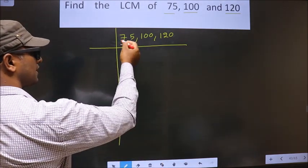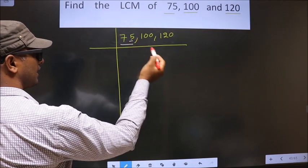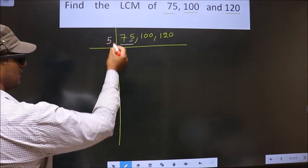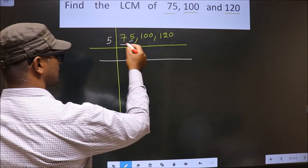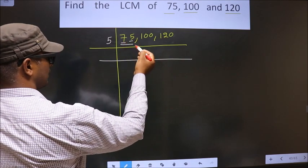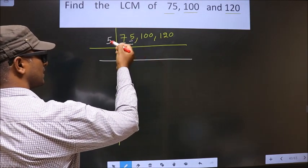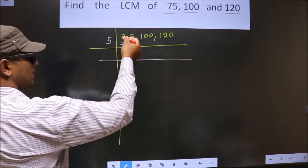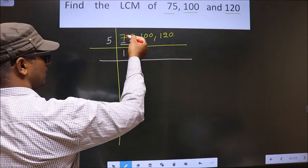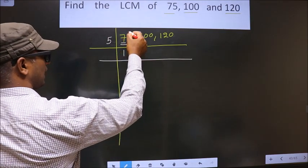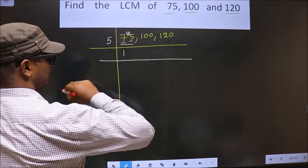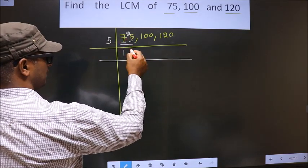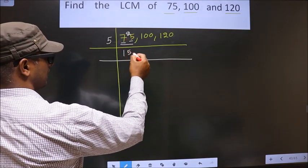For this number, the last digit is 5, so we take 5 here. The first digit is 7. A number close to 7 in the 5 table is 5 once 5. 7 minus 5 is 2, carried forward making it 25. When do we get 25 in the 5 table? 5 fives are 25.